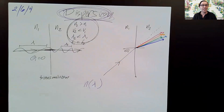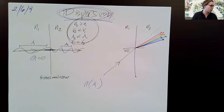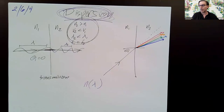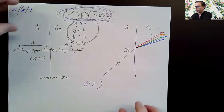That's always going to be true. The red changes direction the least, the purple changes direction the most, and they go in order. So that is dispersion — this spreading out. All the colors were going together along the same path, and then they spread out and take their own individual path based on wavelength, because the index of refraction is a function of wavelength. It's called dispersion, or rainbowization, which is a word I just made up — not a real word.